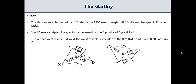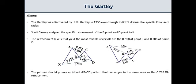But we also have a few other considerations or conditions that we need to keep in mind for us to actually have a valid Gartley to trade. The pattern should possess a distinct AB equals CD pattern that converges in the same area as the 78.6 XA retracement.